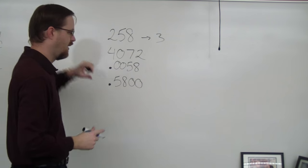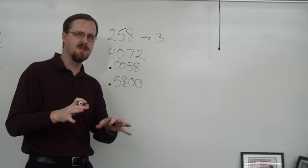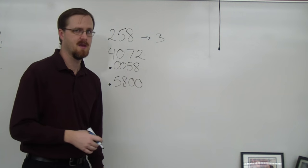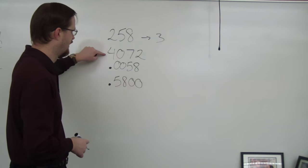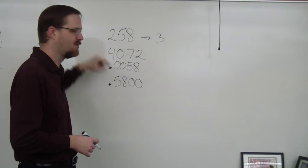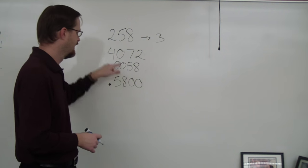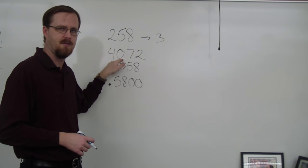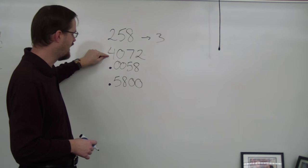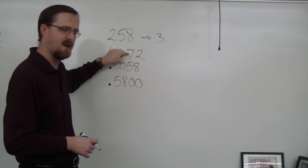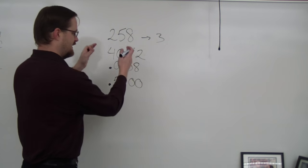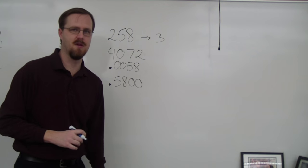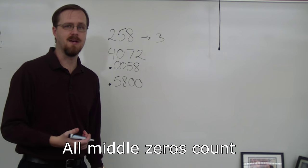Now, where it gets a little confusing is when you start bringing in the zeros. And there are three different types of zeros. So this number, 4072, has the first kind of zero. It's a zero that is right in the middle. On one side, you've got a non-zero digit. The other side, you have a non-zero digit. So by default, when it's sandwiched right there in the middle, it does count as a sig fig.